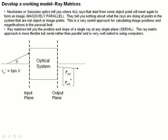So let's compare this with what we've already done. The Newtonian or Gaussian optics approach, where we have an object plane and image ray, an image plane, tells us where every single ray that starts from an object point will meet again to form an image. It's a massively parallel approach.